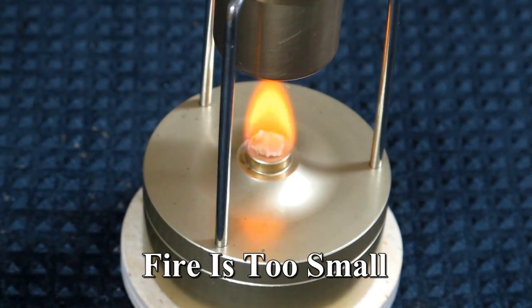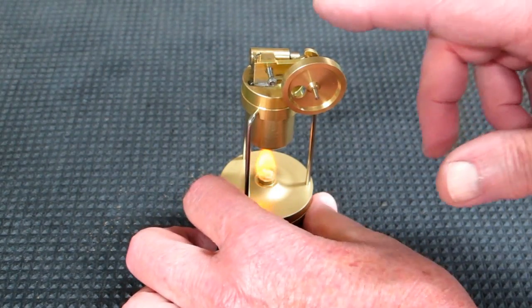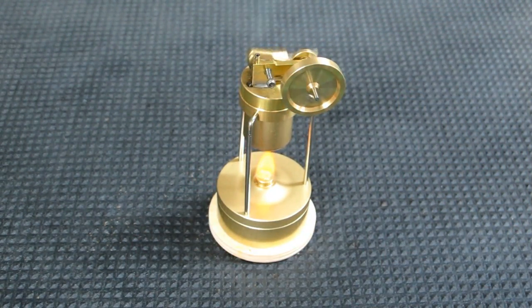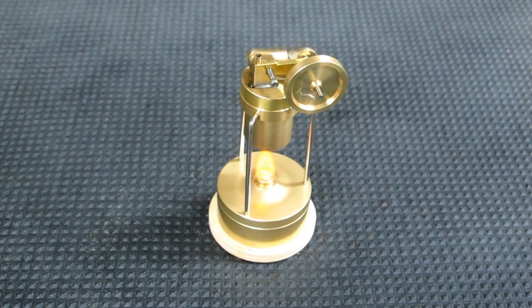Now I made the flame here about as small as I could. And this is actually too small. The flame is not able to boil the water fast enough. And the steam engine is using steam faster than the boiler can make it. So we need to find a happy medium.